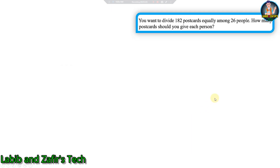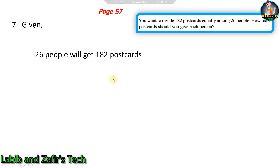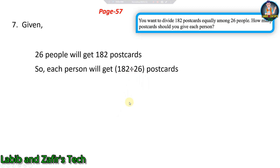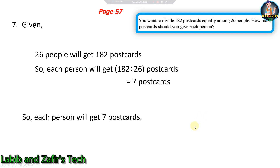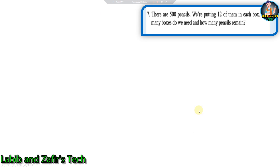Our seventh word problem from page 57: you want to divide 182 postcards equally among 26 people, how many postcards should you give each person? Given 26 people will get 182 postcards, so each person will get 182 divided by 26 postcards, that is 7 postcards each.